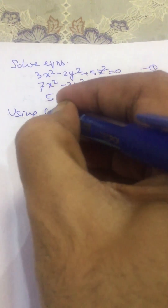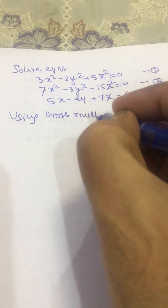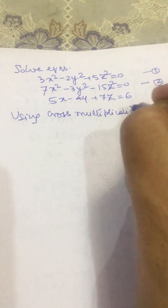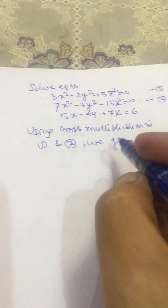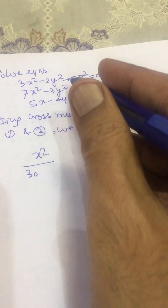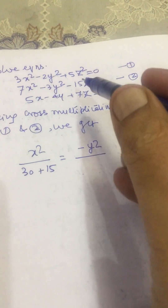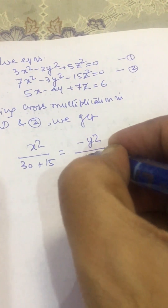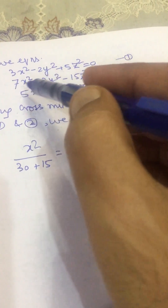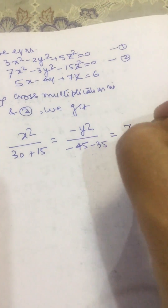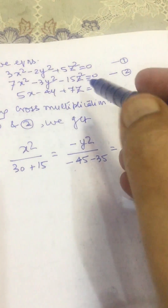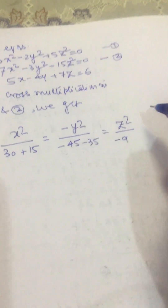Using cross multiplication in equations 1 and 2, we get: x² divided by (−2×−15 minus −3×5), that is 30 plus 15 = 45; minus y² divided by (3×−15 minus 7×5), that is −45 minus 35 = −80; equal to z² divided by (−3×3 minus 7×2), that is −9 minus 14 = −23.